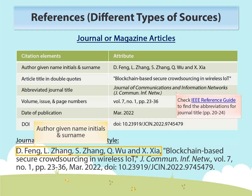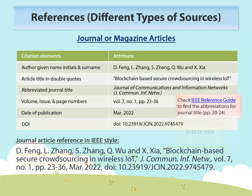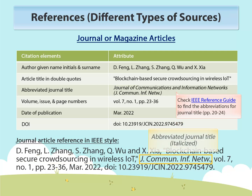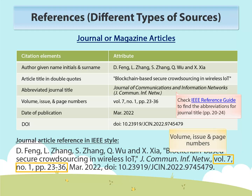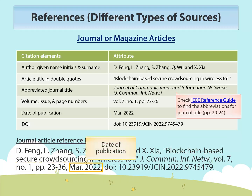To format a journal reference in IEEE style, list the author's given name initials followed by their family name. Then put the article title in double quotes, followed by the abbreviated journal title and italicize it. Add the volume and issue numbers with a comma, and then page numbers, followed by the date of publication.